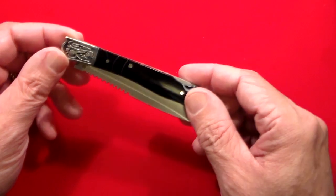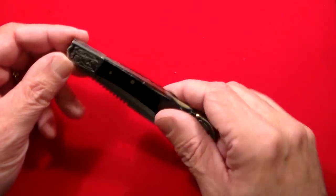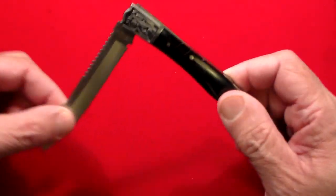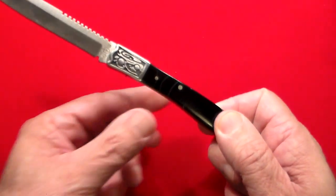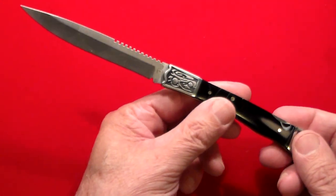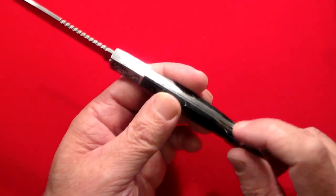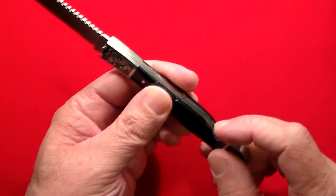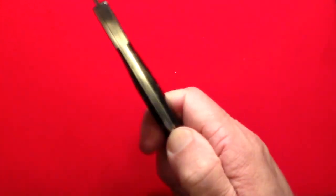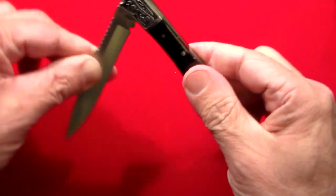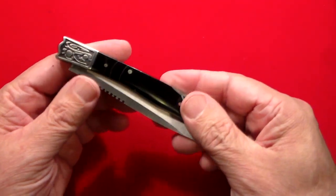This is called a lock-back style, so there's no thumb studs or flippers to open it. You just pull out the blade with your fingers like that, old-fashioned style, and it locks back. To close it, you have this little lever on the bottom here, which you push down. This opens up the spring leaf on the back, and it folds down into place.